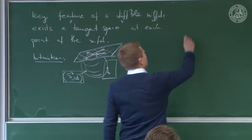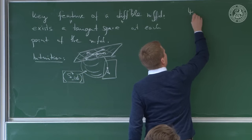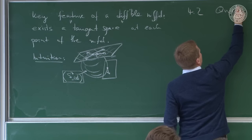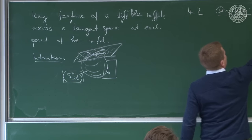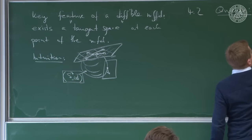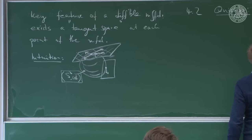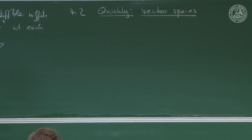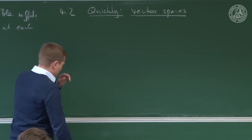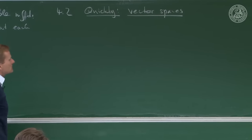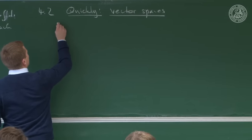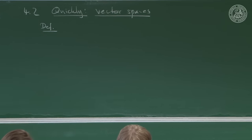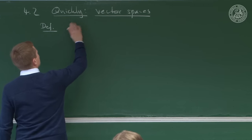Let's have a quick review of section 4.2: vector spaces. A vector space is built on a structure called a field. That's an algebraic field — not what a physicist calls a field, but what a mathematician calls a field.